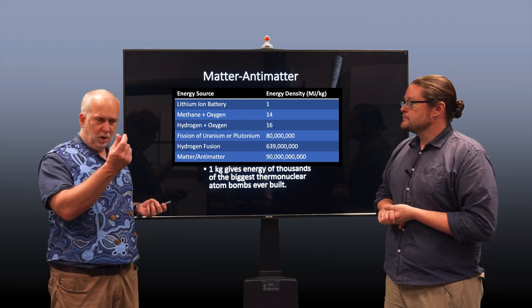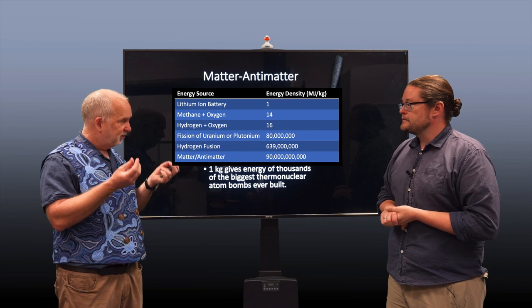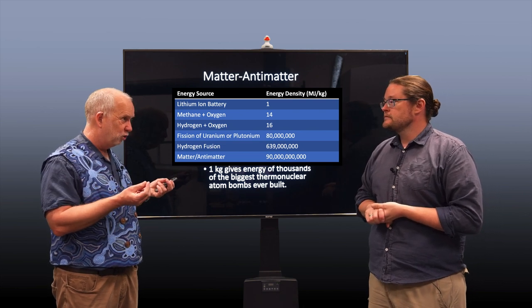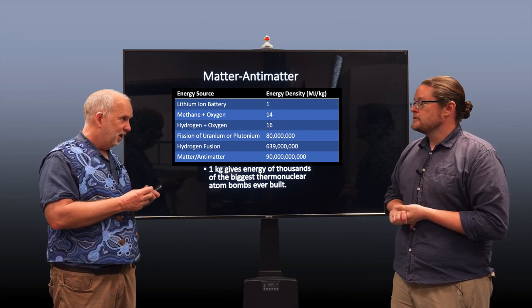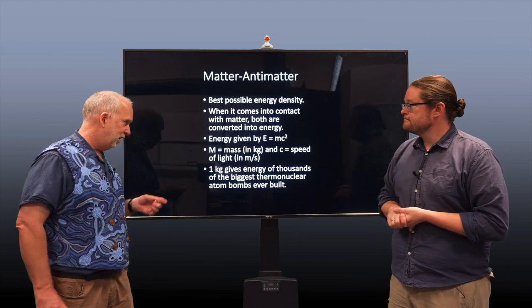It's the best possible energy density because if you get a proton and an anti-proton, the antimatter counterpart, they both have the same mass. Just one has a positive, one has a negative charge. If you combine them, they annihilate each other and produce gamma rays, and they give out a lot of energy.